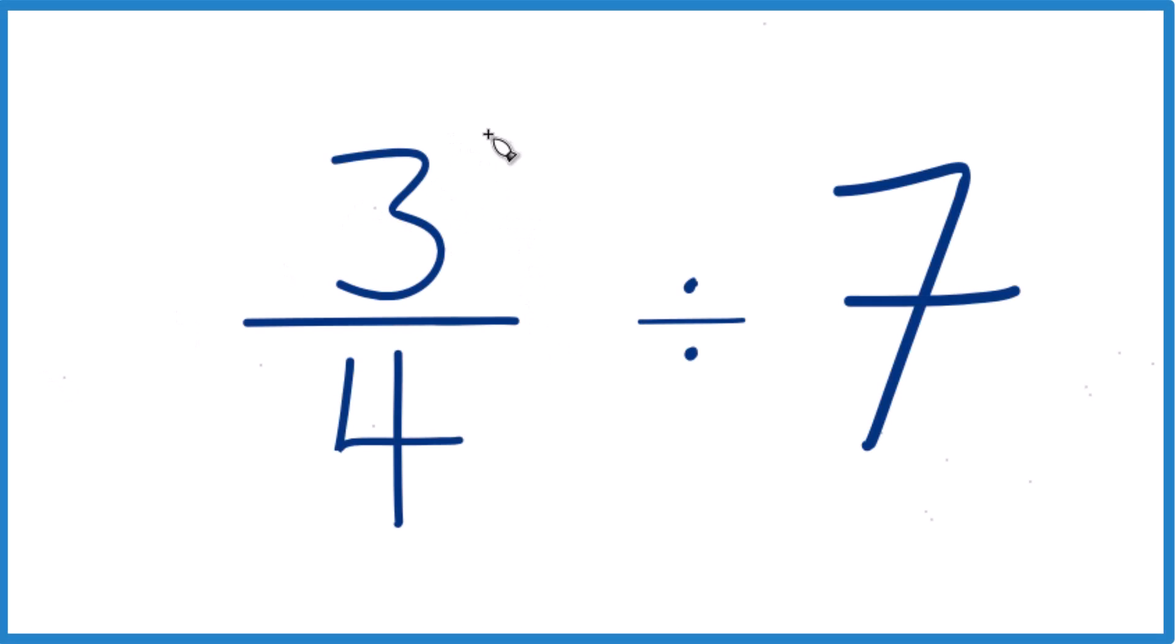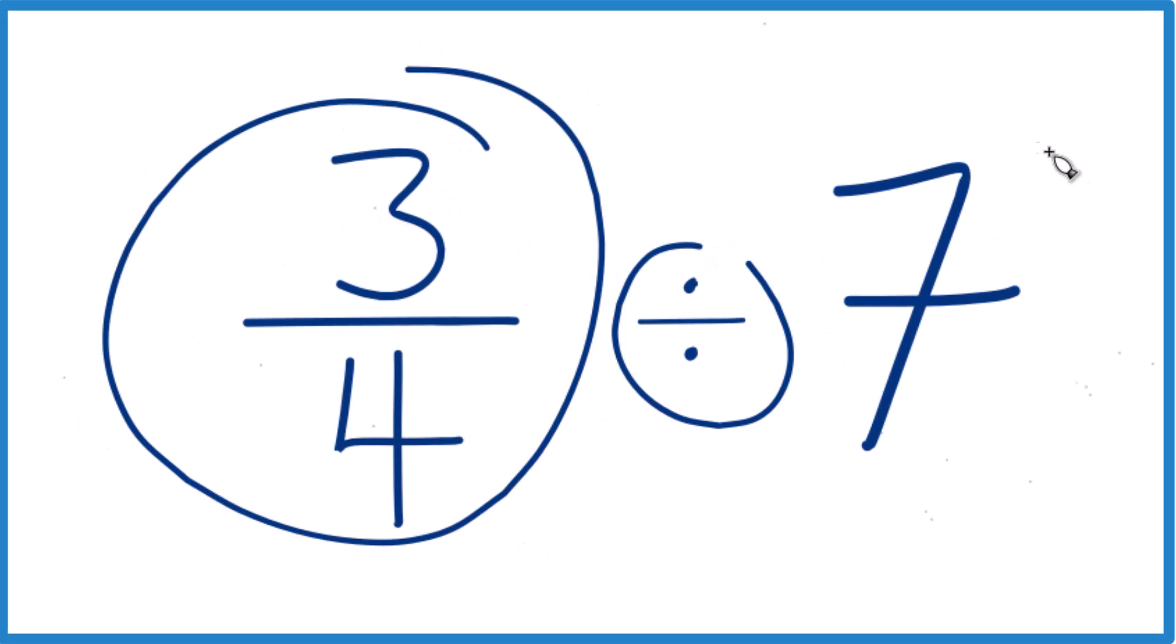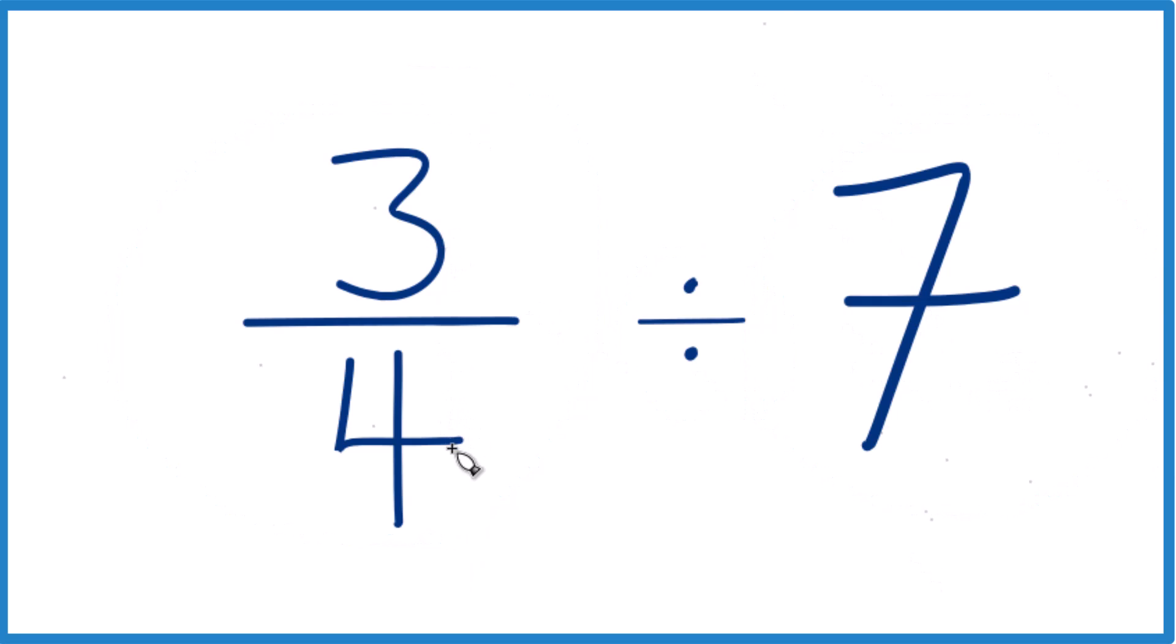Let's see if we can find three-fourths divided by seven. So first off, three-fourths, that's less than one. And we're trying to see how many times seven goes into a number that's less than one. So we should end up with a smaller number, a fraction. Keep that in mind.